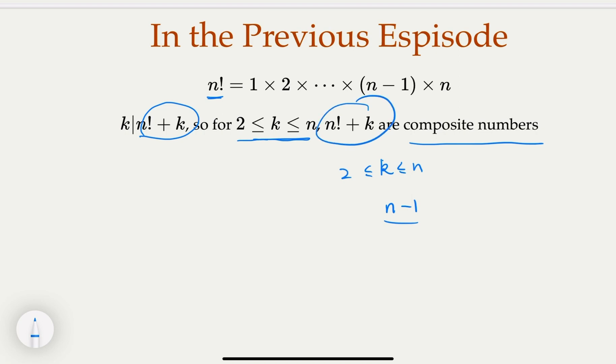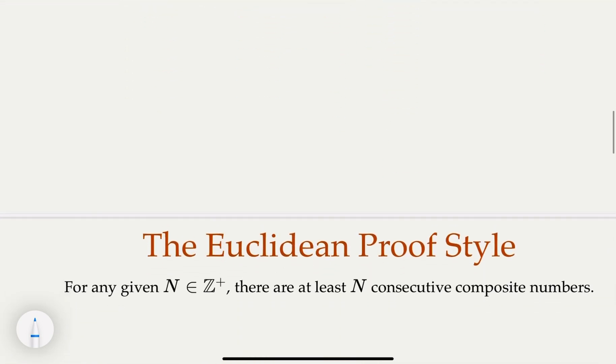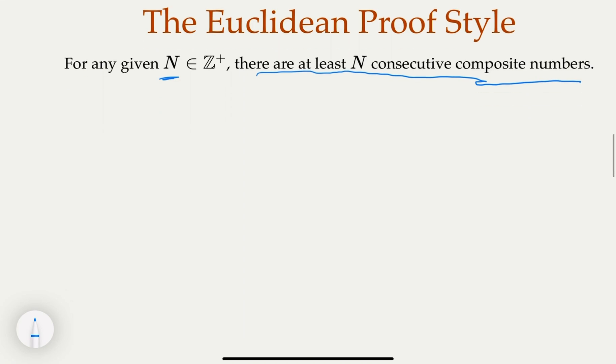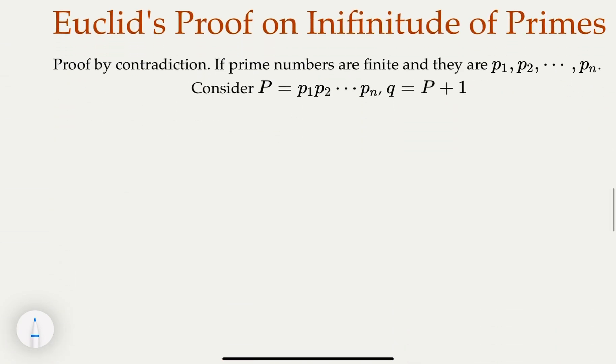Now today we introduce a Euclidean proof style for the same conclusion, which is: for any n, no matter how big it is, there are going to be at least n consecutive composite numbers. That shows the gap can be as large as n.